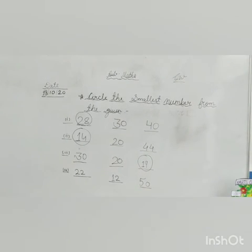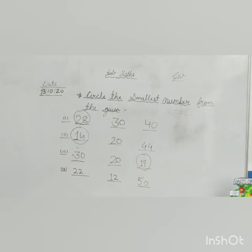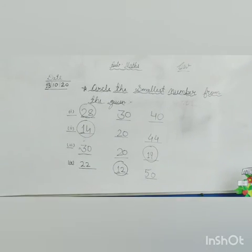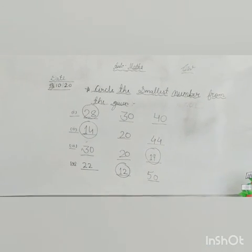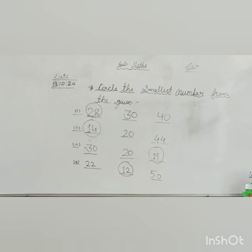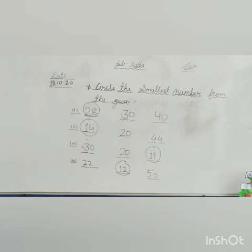Next is 22, 12 and 50. So, which number is smallest here? 12. So, circle on the number 12. So, kids, this way you have to do your work in your notebook and do practice of circle the smallest number. Okay? Aapko iski bhoh zhaadha practice kanni hai. Do it well.